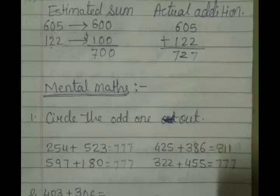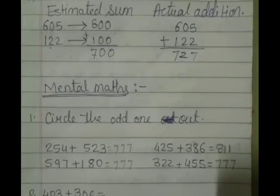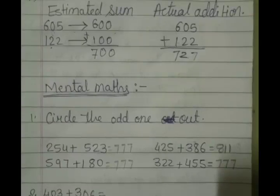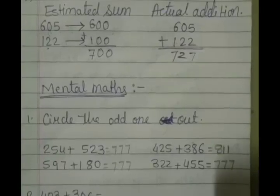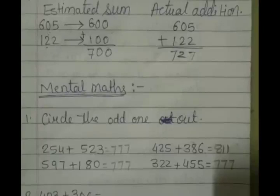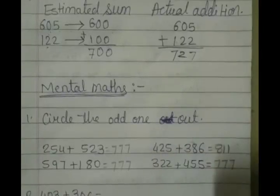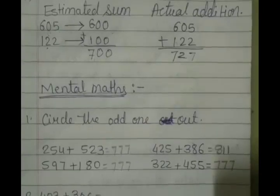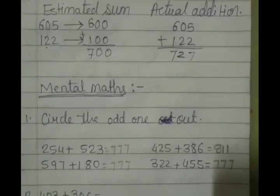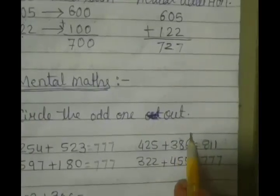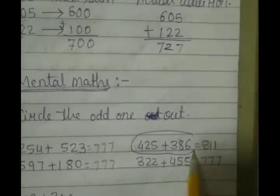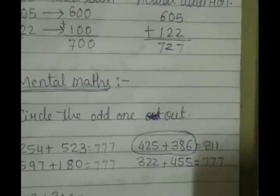777 for first number, 811 for second number, 777 for the third sum and 777 for the last one. So who is the odd one? That is 425 plus 386 is the odd one. So let's circle this given addition problem. So this is the odd one out.